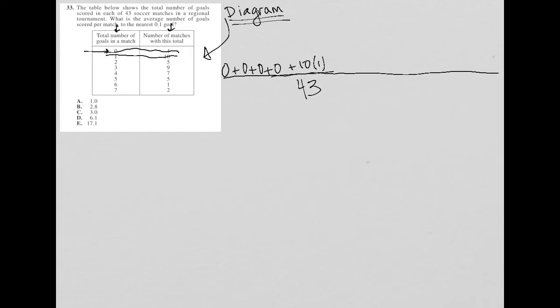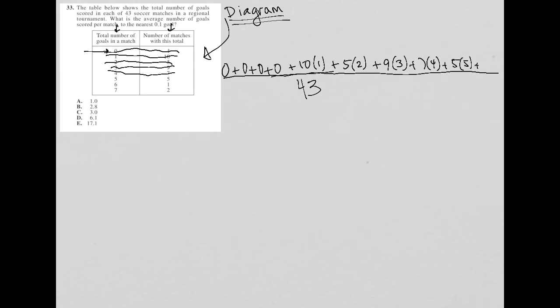That takes care of the second row. Then I have five matches with two goals each, so that's five times two — the same as writing two five times. I'll shorten it to five times two. Then nine matches with three goals, so that's nine times three. And seven times four. And five times five. And one times six, which is just plus six. And two times seven, which for space I'll just write as 14.